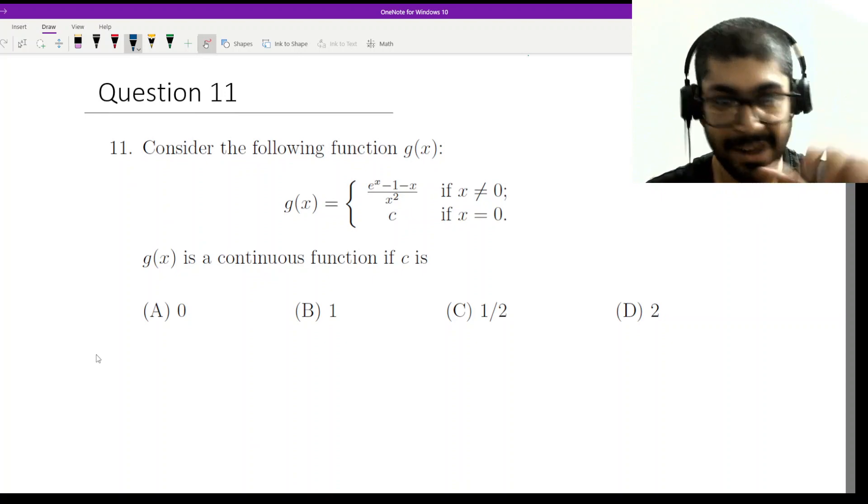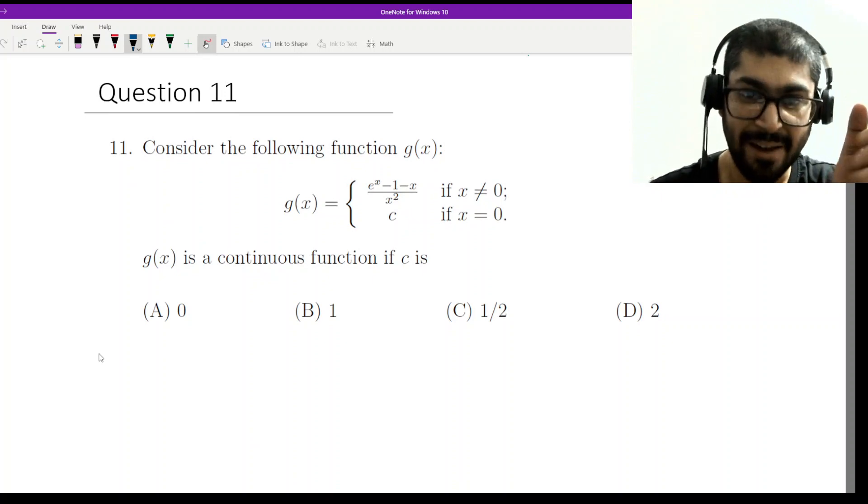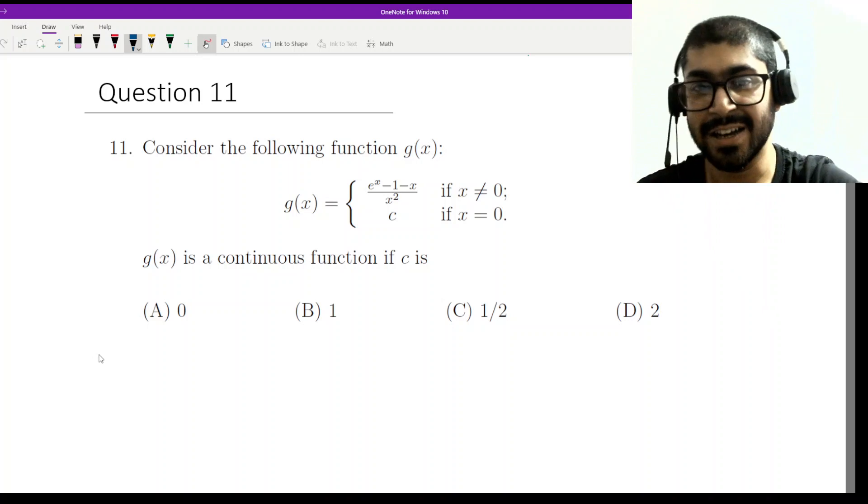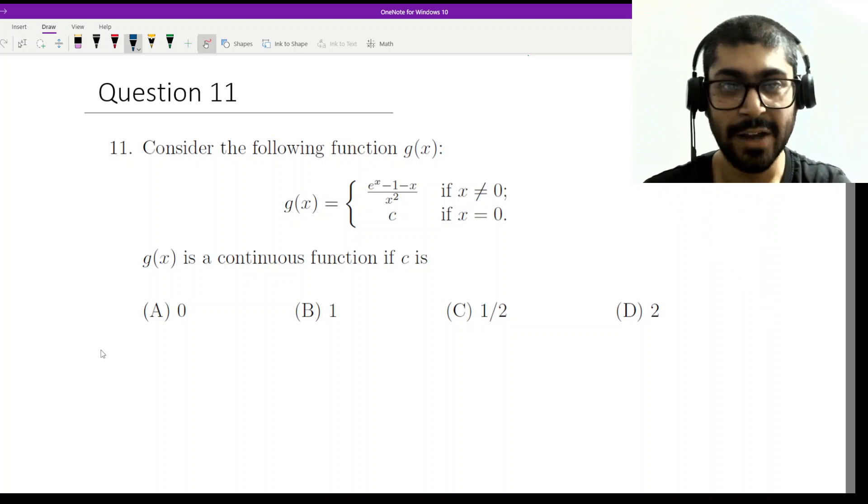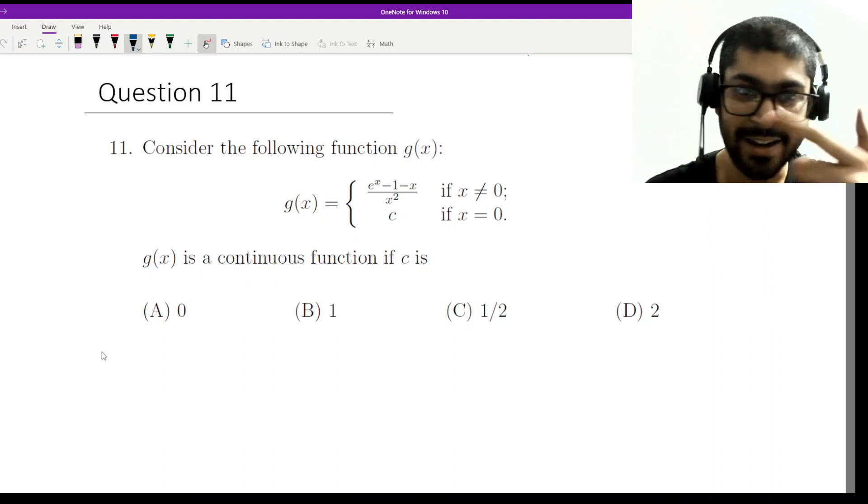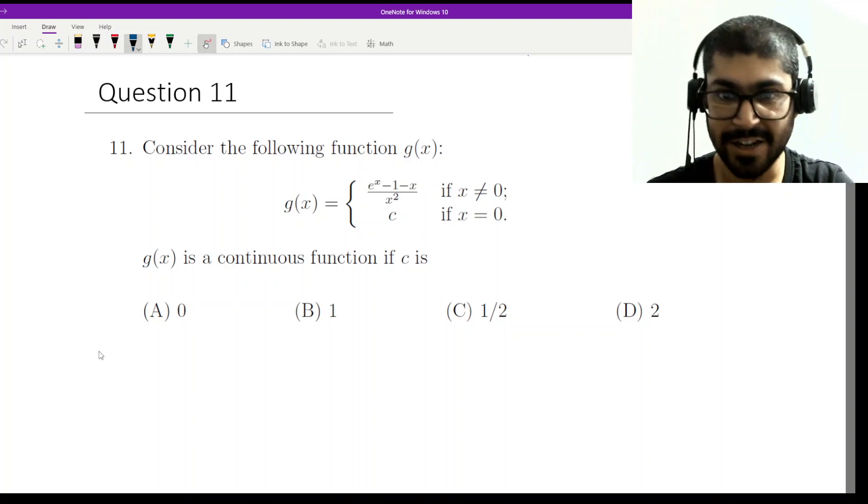So we have to calculate the limits of g(x) and we have to get the limiting value of g(x) at 0, so that if we put that as a constant, then the right hand and the left hand limits will be equal and g(x) would be continuous.